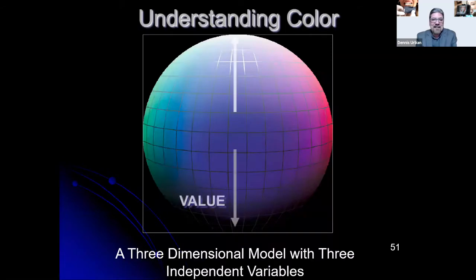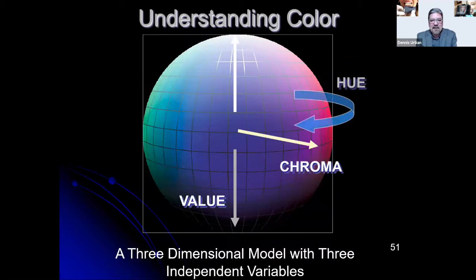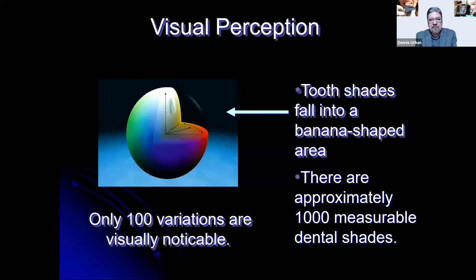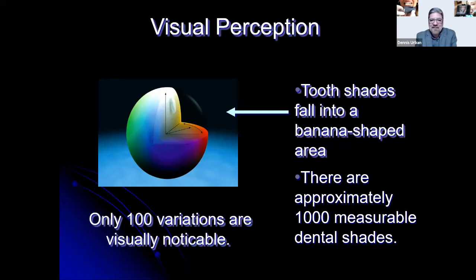When talking about teeth, we use a three-dimensional model with three independent variables: value, chroma, and hue. The CIE sphere has three axes — lightness or value is highest at the top (brightest), darkest at the bottom. Tooth shades fall into a banana-shaped area. Chroma is the color's richness and saturation, originating from the core outward. There are only approximately 1,000 measurable dental shades, though the sphere contains millions of color variables.